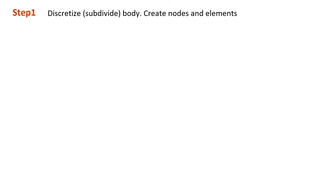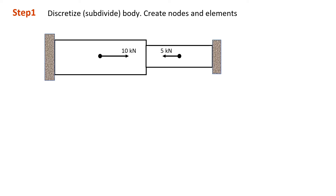The first step is to discretize the body — to create the nodes and elements. Imagine we have a bar problem where both ends are fixed joints, and we have two different sizes of bar, bar A and bar B. The best way to create nodes is: if you see something happen to the structure, then you create a node at that point. For example, we create node 1 at the beginning of the structure. Between that point and the next change, nothing happens, so we do not need to create nodes.